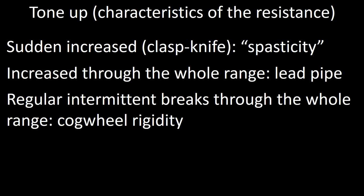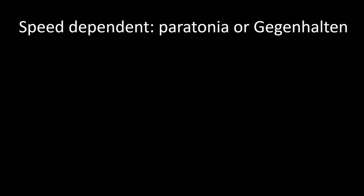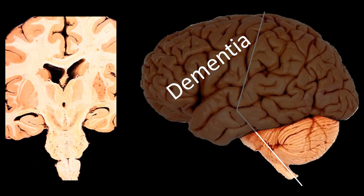The fourth type of rigidity is speed-dependent rigidity, called paratonia or Gegenhalten. Paratonia is characterized by low resistance when you move the limb slowly, and strong resistance when you attempt to move it rapidly. This type of rigidity is often found in dementia, especially if frontal lobes are affected.